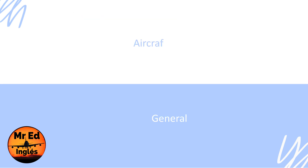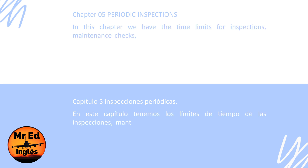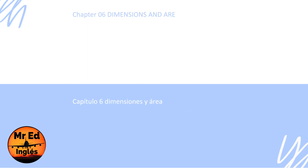Aircraft general. Chapter 5: Periodic inspections. In this chapter, we have the time limits for inspections, maintenance checks, and overhaul of the aircraft, its systems, and components.